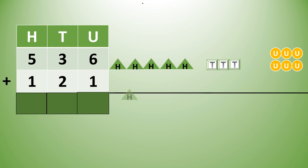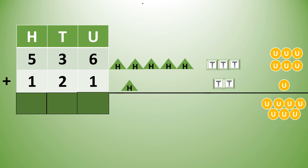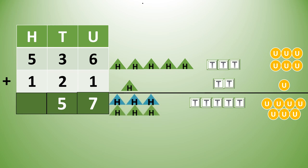Plus 1 hundred, 2 tens, plus 1 unit. Let us now add the units place numbers. In the units place we have 6 units plus 1 unit — we get 7 units. Let us draw 7 units and write 7. Now tens place: 3 tens plus 2 tens — we get 5 tens. So 536 plus 121, we get 657.